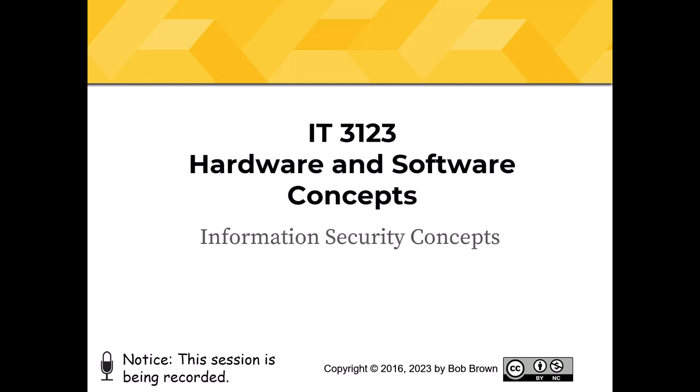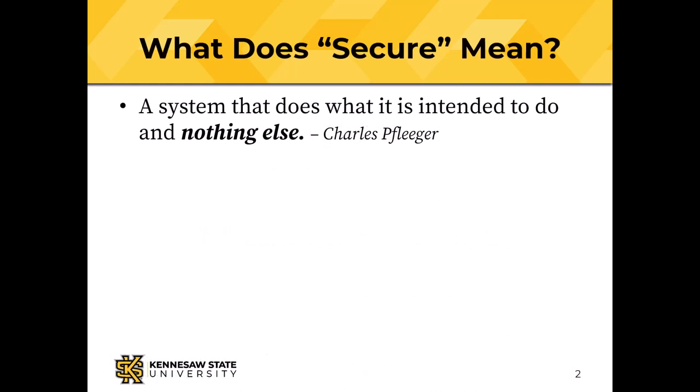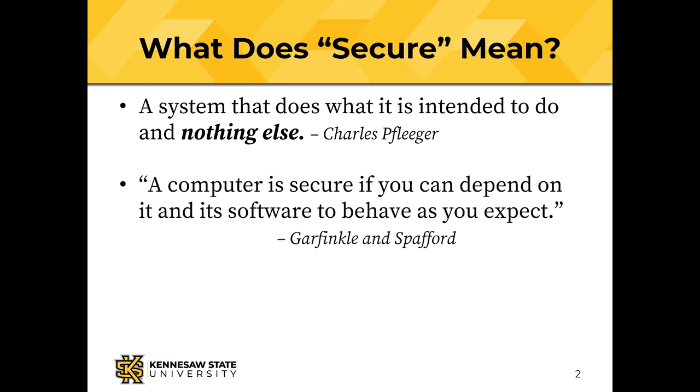Good morning. Today we're going to talk about information security concepts, which is an important part of information technology. We start with a definition of what 'secure' means. I like Charles Flieger's definition: a system is secure when it does what it's intended to do and nothing else. The 'nothing else' is the important part — people break into systems by coercing them into doing something they were not intended to do, like letting the bad guys in. Garfinkel and Spafford say a computer is secure if you can depend on it and its software to behave as you expect.